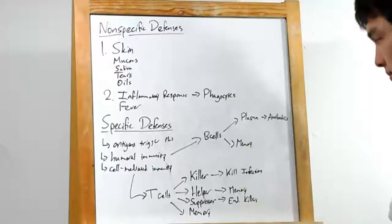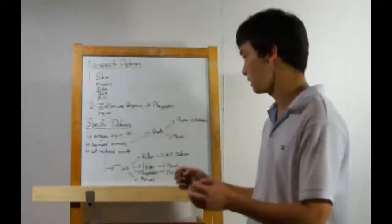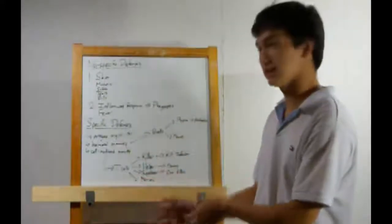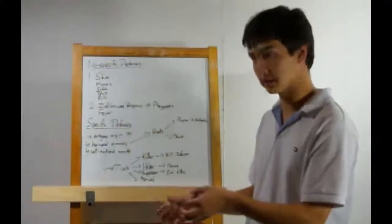Then we have helper T cells. These will figure out which T cell is doing the job right, and create memory T cells so it can fight off the infection more efficiently next time.